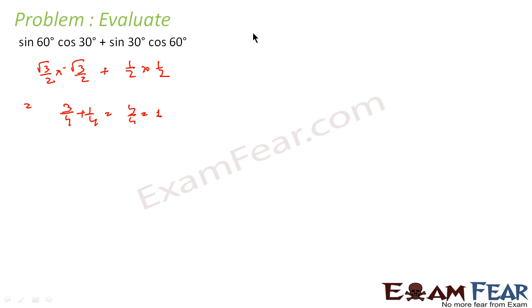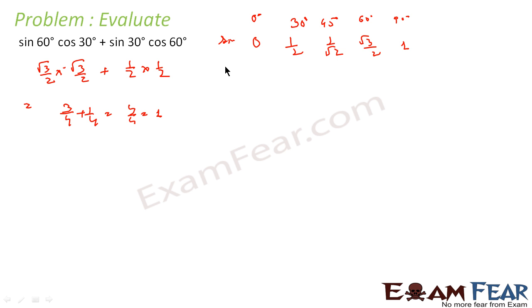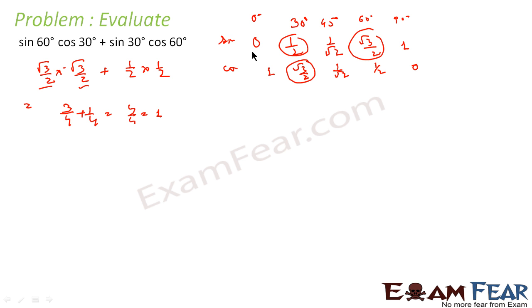If you don't remember the table, you can use the mnemonic: 0, 1 by 2, 1 by root 2, root 3 by 2, and 1 — for 0°, 30°, 45°, 60°, 90° for sin. And for cos it is the reverse: 1, root 3 by 2, 1 by root 2, 1 by 2, and 0. So you can find cos 30 and cos 60 from there.